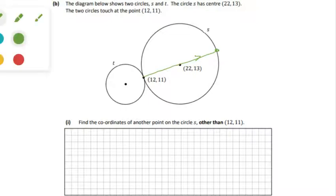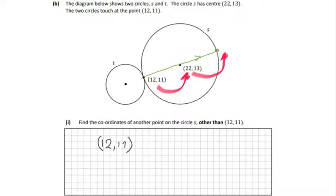We need to go from (12,11) to (22,13), and we need to go on again to the next point. So (12,11) goes to (22,13). In the x direction, it went up plus 10. In the y direction, it's going up from 11 to 13, which is plus 2.